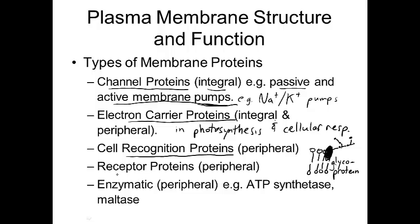Another type of protein in the membrane is receptor proteins, which are for receiving things like hormones. Finally, there are enzymatic proteins — enzymes catalyze chemical reactions in or outside the cell, and some are embedded in the membrane. An example is the enzyme ATP synthetase, which synthesizes ATP. Another example is maltase, an enzyme that breaks down maltose, which is a type of sugar.